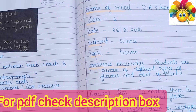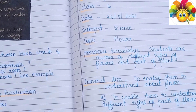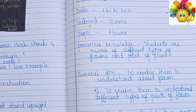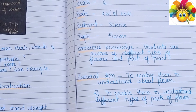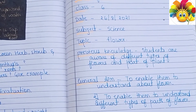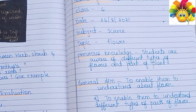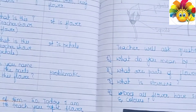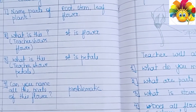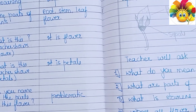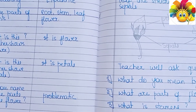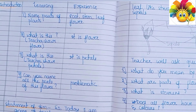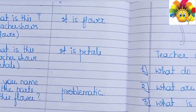Under the previous knowledge section, students are already aware of different types of flowers and parts of plants. After that, you can see the introduction section — these are the questions we have to ask students before introducing our lesson.